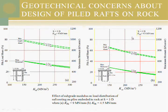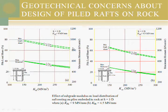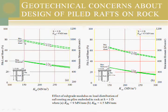As you can see, the pile load sharing is less when we have a lower spring constant because the pile is weaker and the rock is taking more. In this case, the difference between these assumptions can affect the pile load. If we assume the pile spring constant is 4.5 and then we actually reach 9 MN, the pile will take more load and may not be adequate to resist the wall.